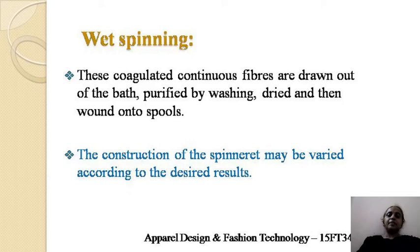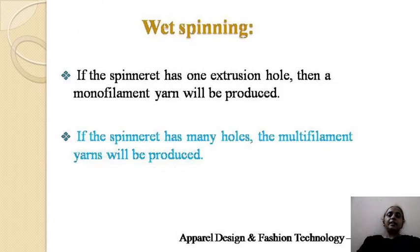The construction of the spinneret may be varied according to the desired results. The spinneret consists of nozzles or holes varying in diameter and number. If the spinneret has one extrusion hole, a monofilament yarn will be produced — that is a single filament, known as monofilament yarn. If the spinneret has many holes, multifilament yarns will be produced.